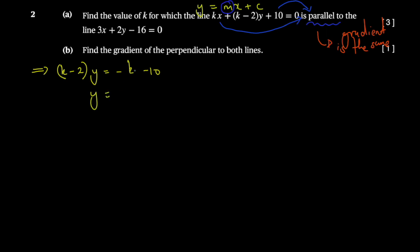You get y = -k/(k - 2) × x - 10/(k - 2) like this. Here the gradient is equal to the coefficient, which is this part here. We're also going to do the same thing for the next equation.